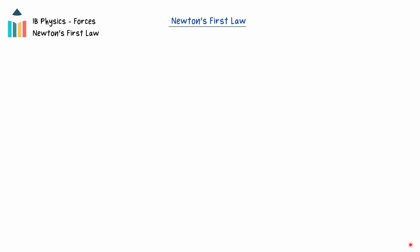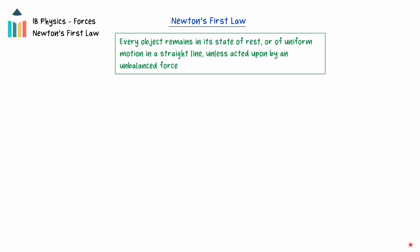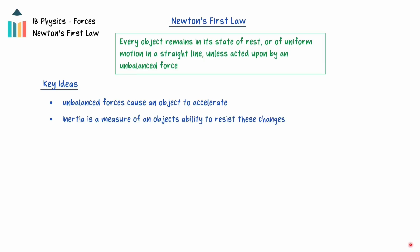Sir Isaac Newton's three laws of motion describe the relationships between forces and motion. Newton's first law, also known as the law of inertia, states that every object remains in its state of rest or of uniform motion in a straight line unless acted upon by an unbalanced force. The two key ideas here are that the motion of an object, whether at rest or moving at a constant velocity, will not change unless acted upon by an unbalanced force, and that objects have an inherent property to resist accelerations. This property is referred to as the inertia of the object.